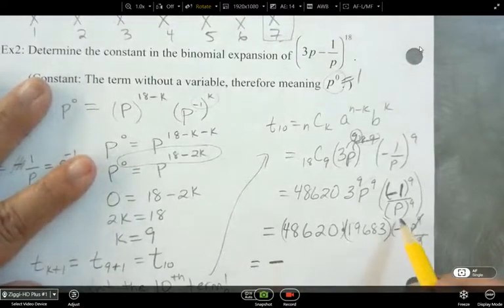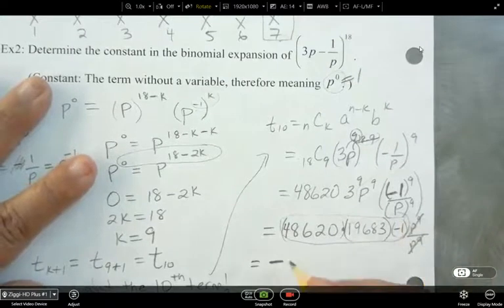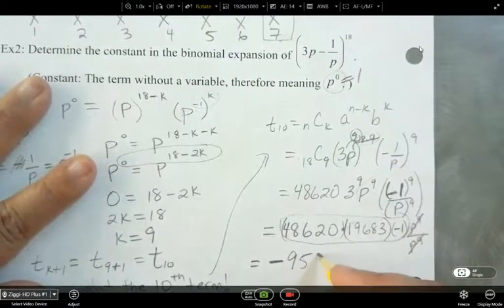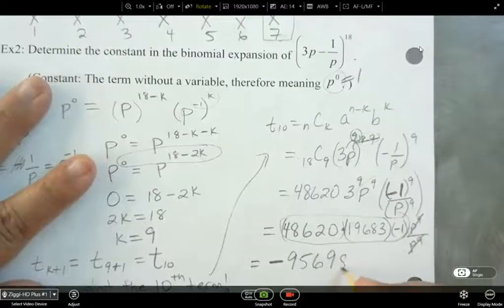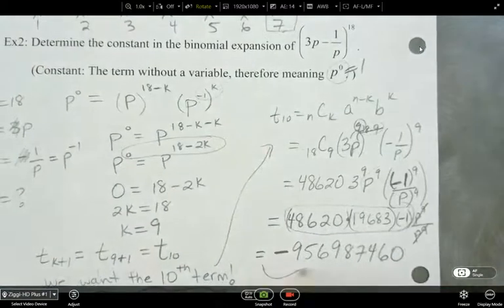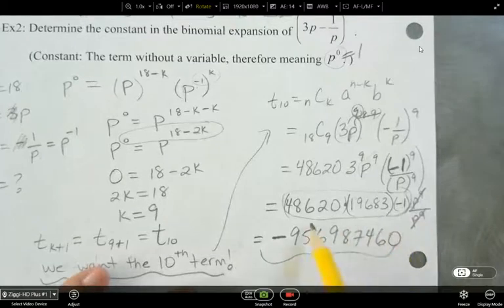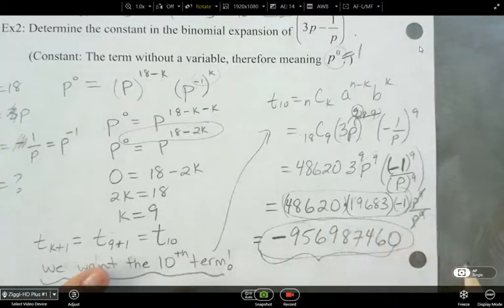So negative, and then I'm going to just simplify all of this, multiply that together. 956,978,460. All right. This is the constant that we're looking for. There is no variable on it. All right, so this is the 10th term.